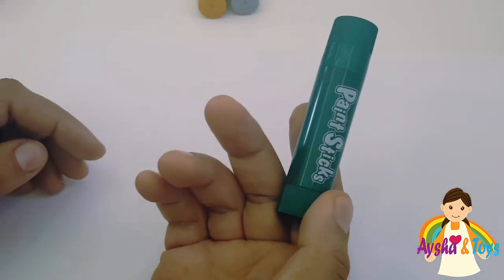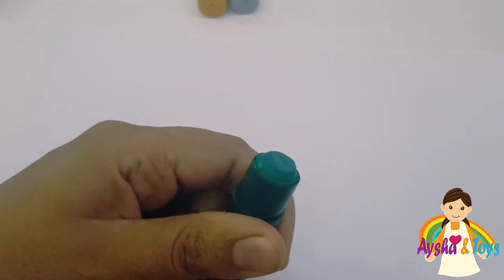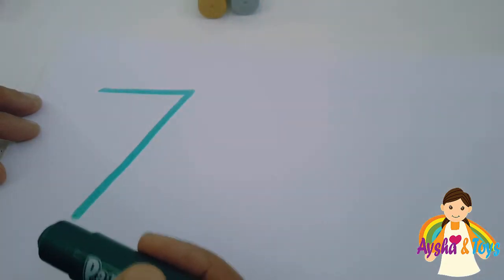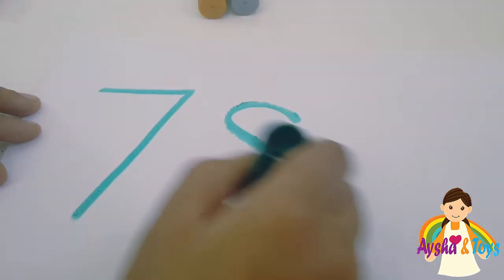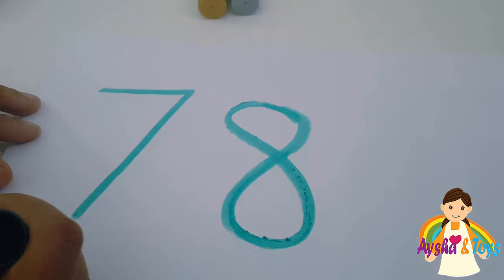Then, we have here. Green. Green color. Then, we have seven. Eight. Ten.